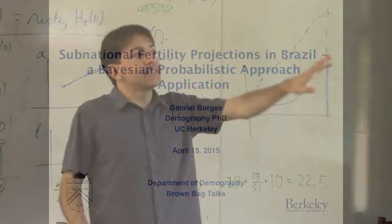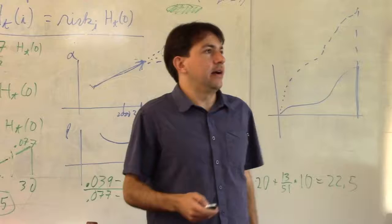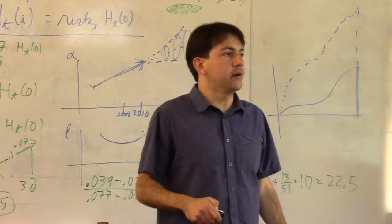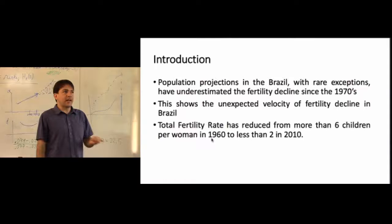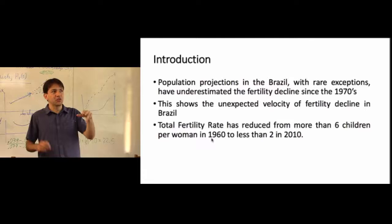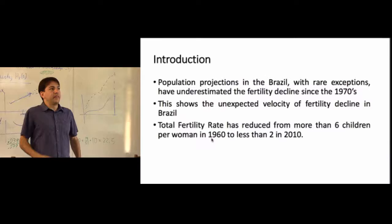This paper attempts to make a different population projection, specifically a Bayesian probabilistic approach applied at subnational levels in Brazil. Population projections in Brazil have been underestimating fertility decline since the 1970s. I discuss in the paper that all official and key academic projections have normally underestimated the fertility decline in Brazil.